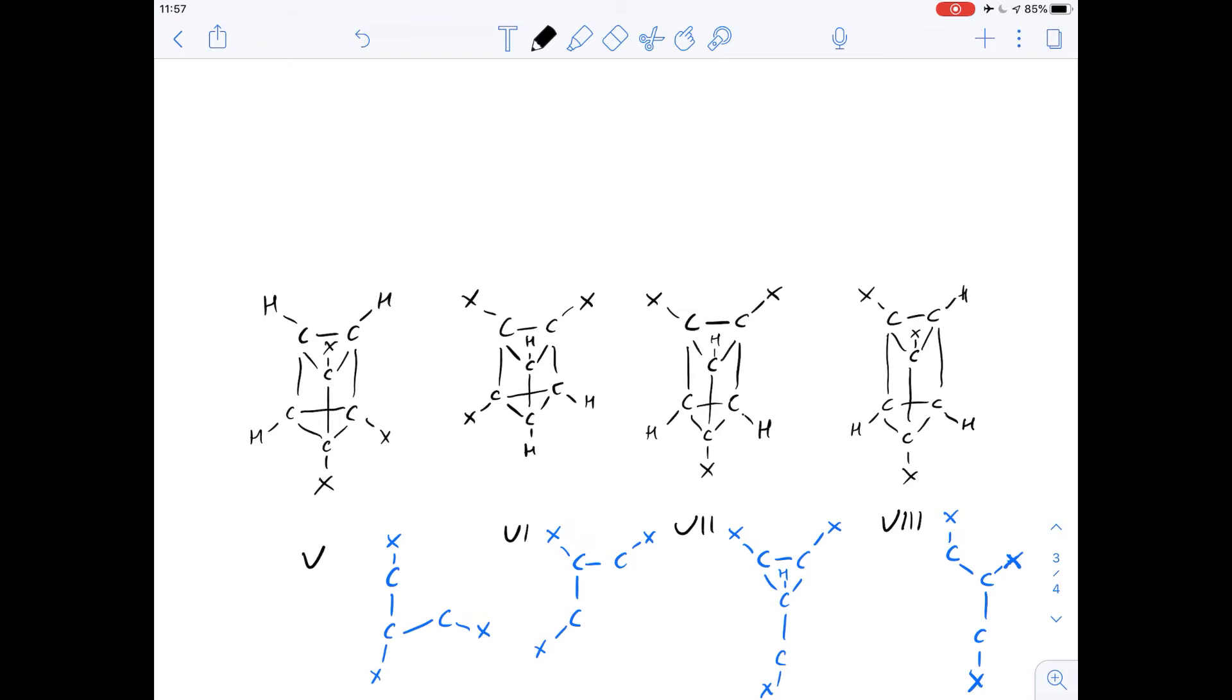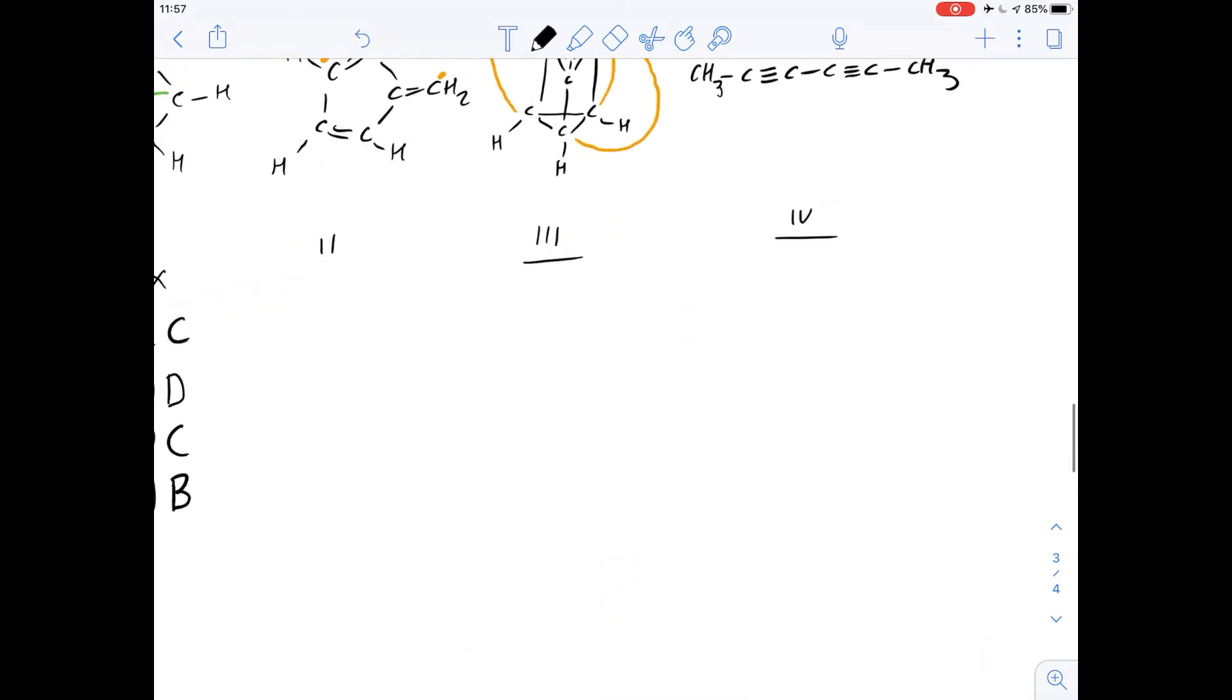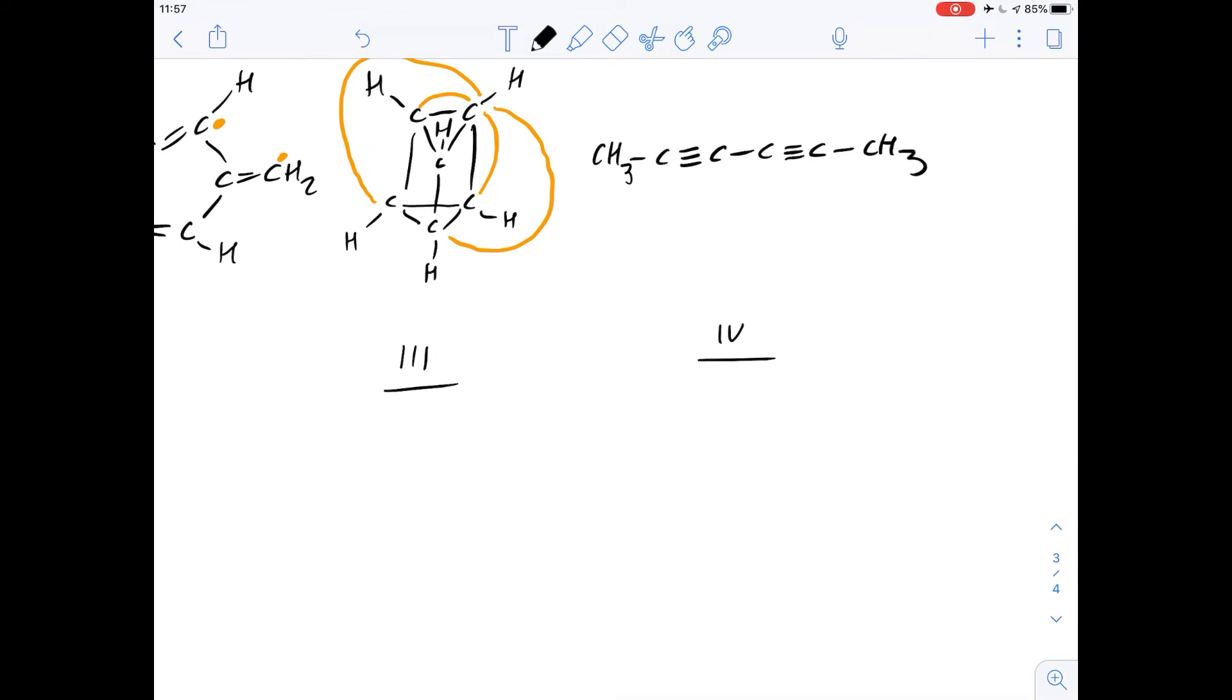Number 22 asks how many different tri-substituted isomers can be produced from structure 4? If we simplify this and just draw a line, that means all the carbons, we have to put three different groups onto this so I'm just going to draw that as X.